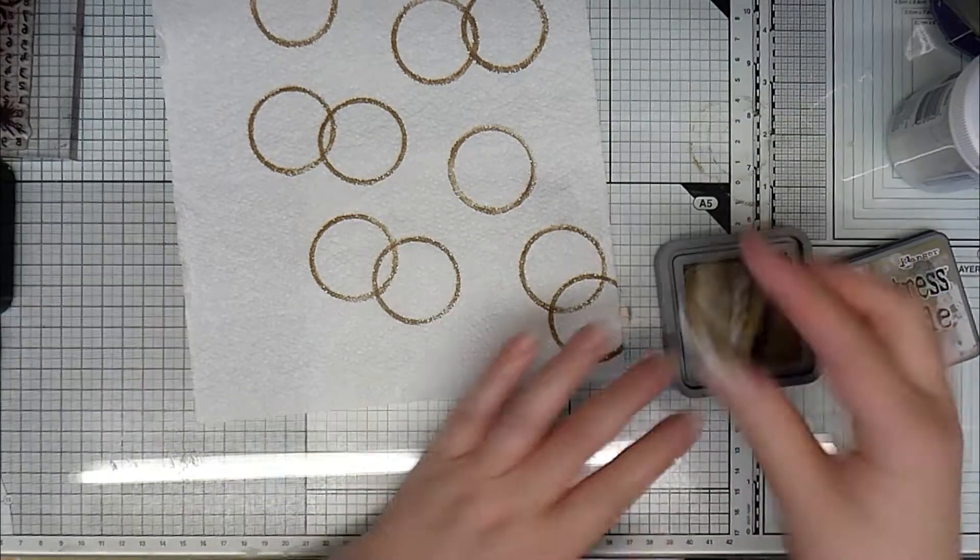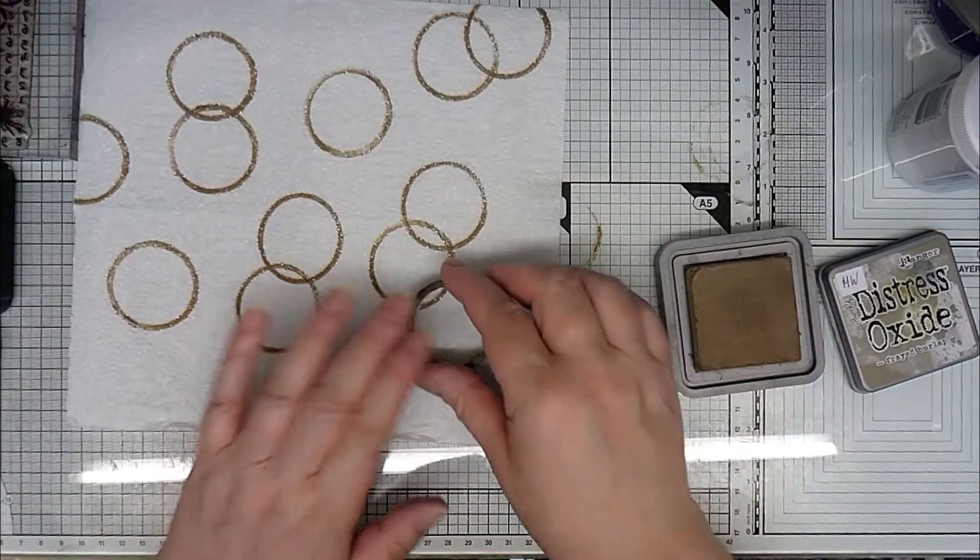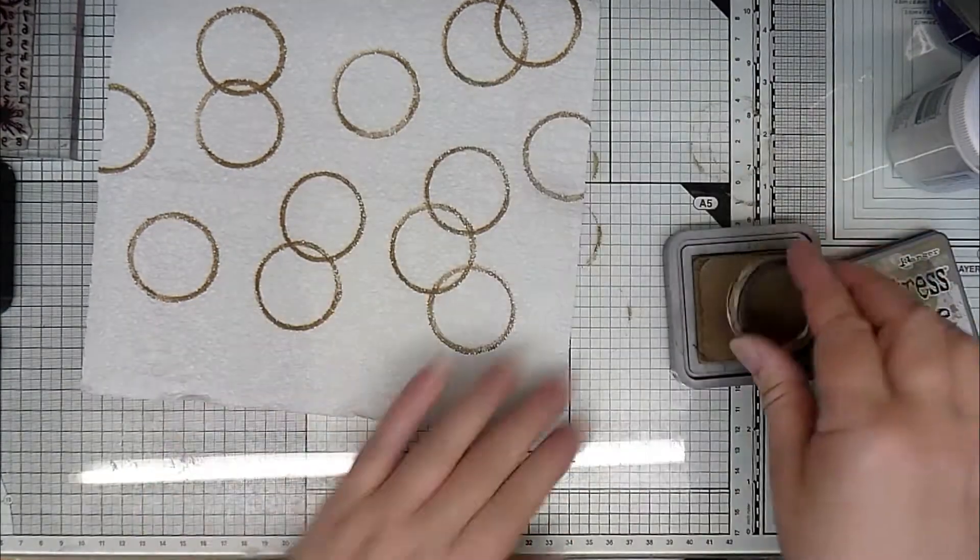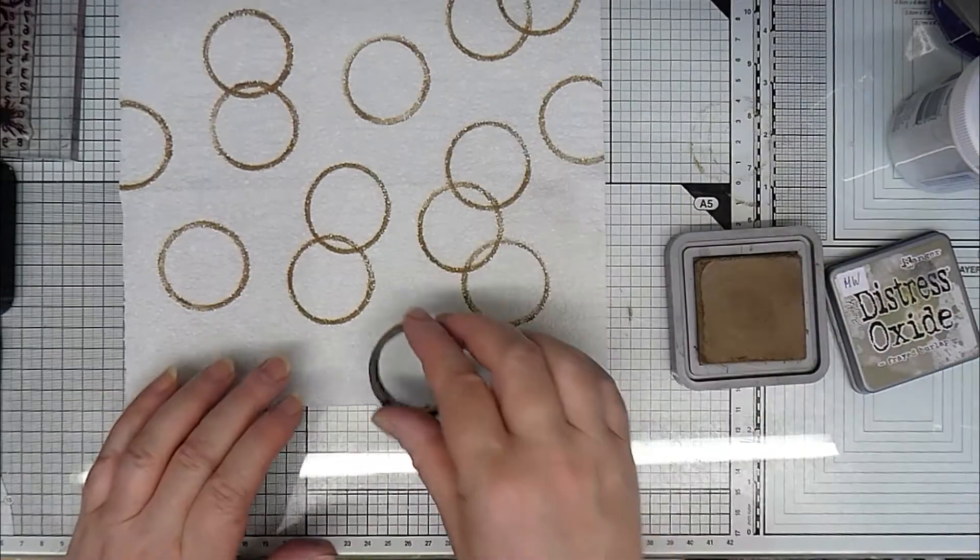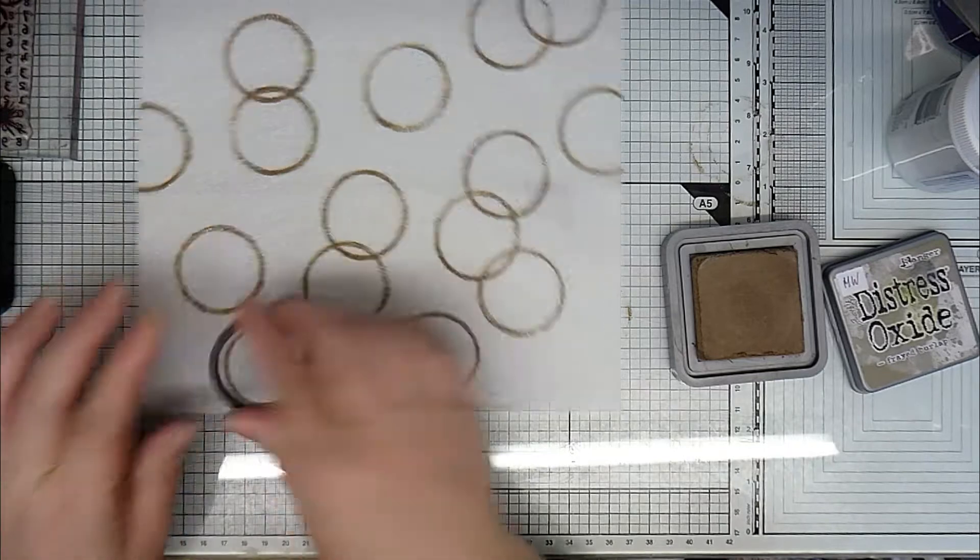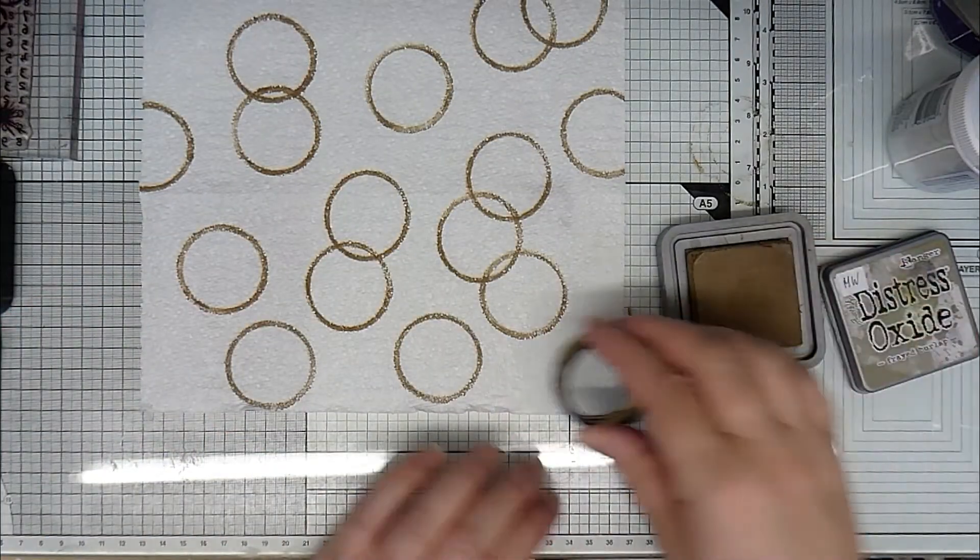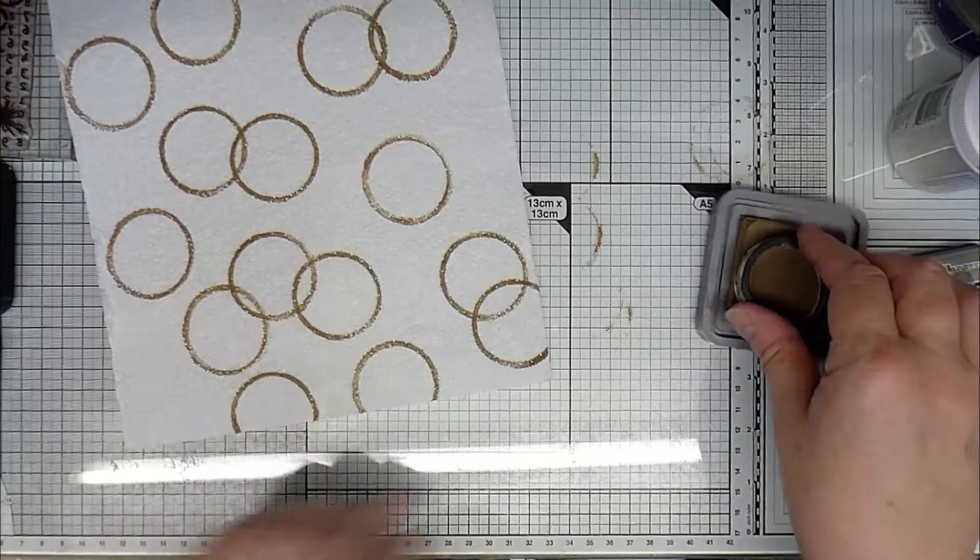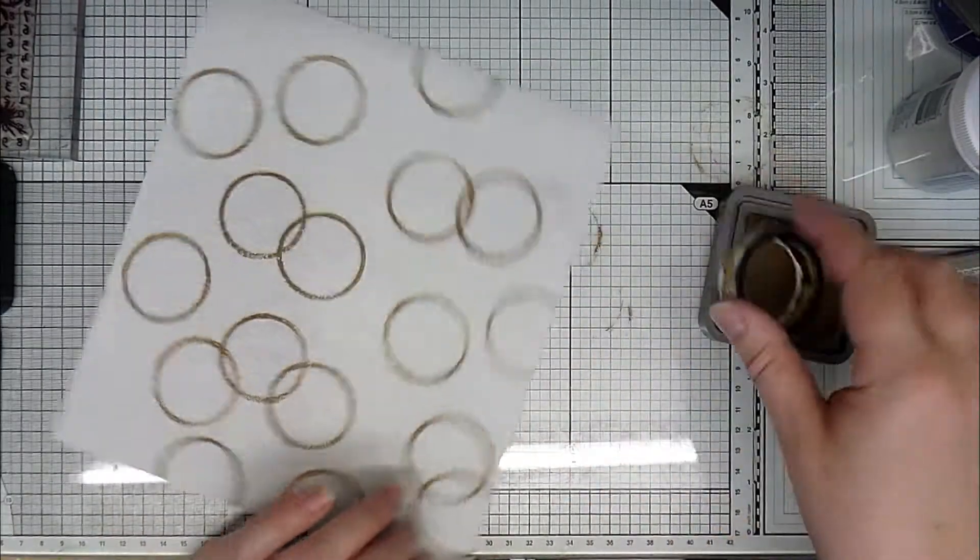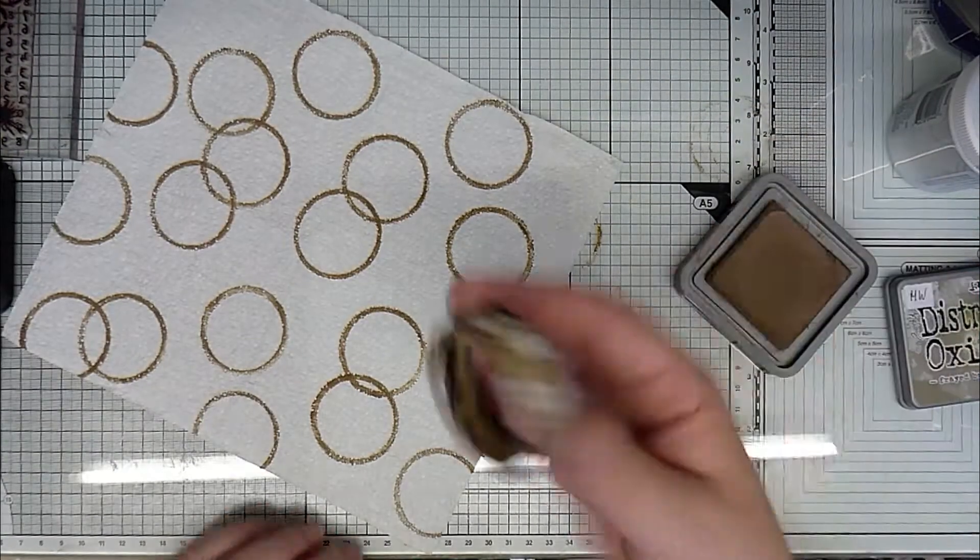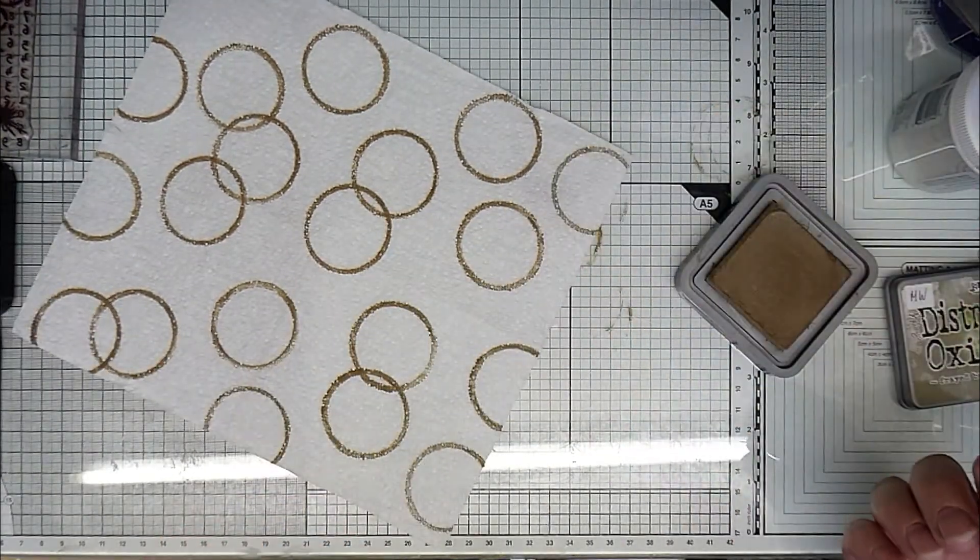This has been used a lot for mark making, so it's actually coated in acrylic paint. This distress oxide doesn't sink into the roll because there's a layer of acrylic paint on there. As you can see, I'm just going randomly all over my single sheet of kitchen roll. I've got a reasonable amount of ink on the ring all the time.